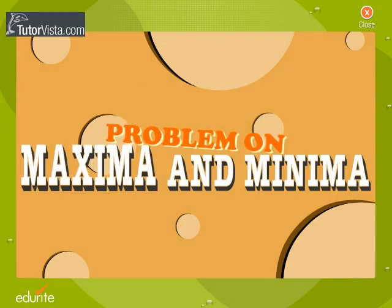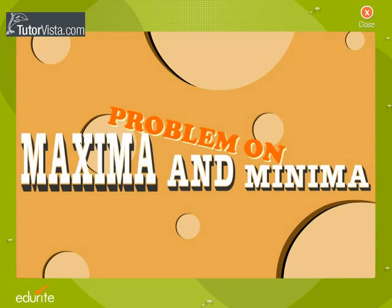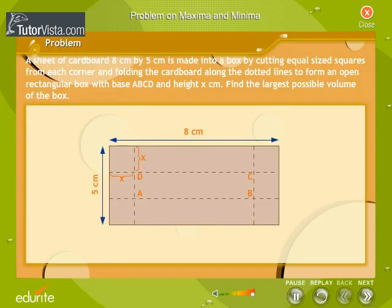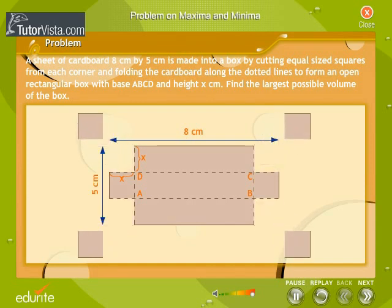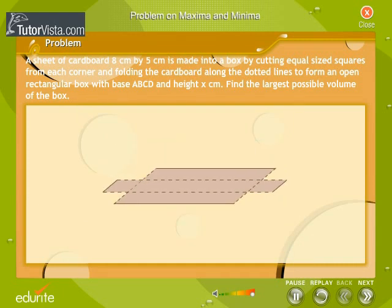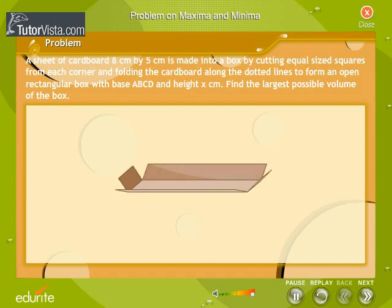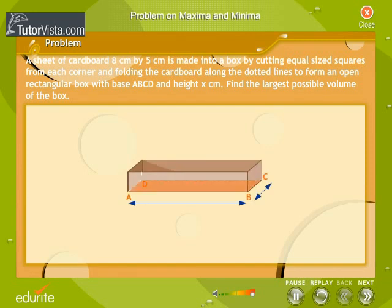Problem on Maxima and Minima. A sheet of cardboard 8cm by 5cm is made into a box by cutting equal-sized squares from each corner and folding the cardboard along the dotted lines to form an open rectangular box with base ABCD and height X cm. Find the largest possible volume of the box.